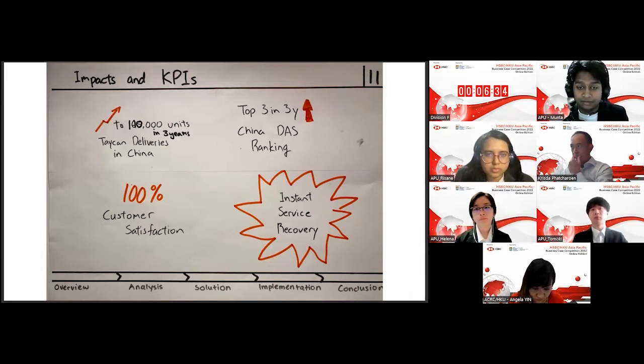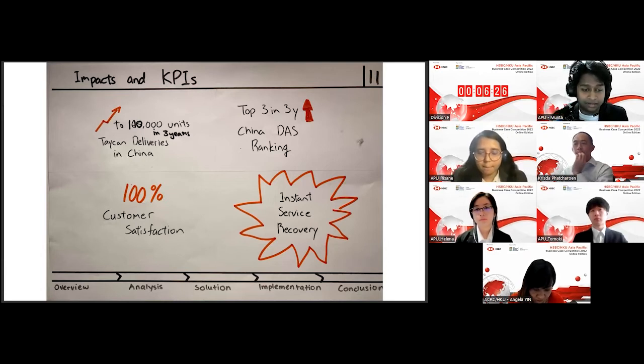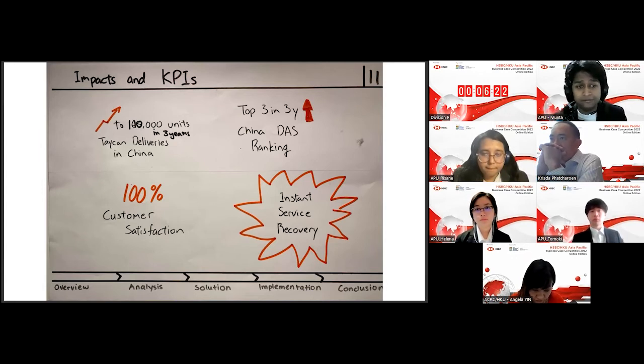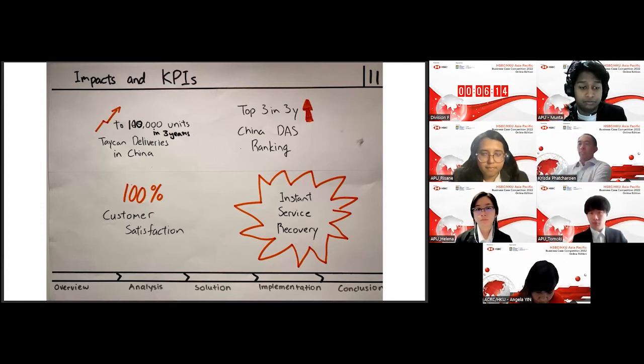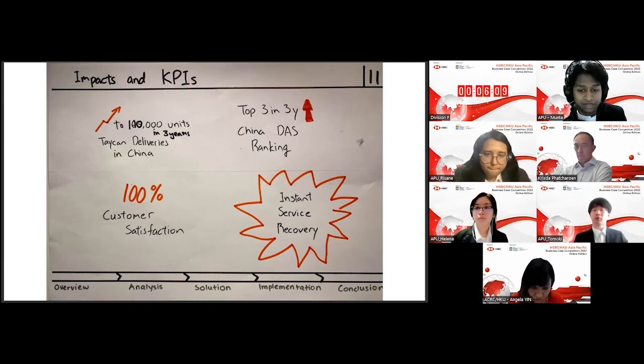And so after that, we want to reach the Chinese dealership association index, satisfaction index of top three in the next three years. Currently, we're ranked 10th. And next, we want to reach 100% customer satisfaction. If we aim for the stars, we'll reach the sky. And so if something such as total carbon neutrality can be a dream, then so can an achievable dream, then 100% customer satisfaction can also be an achievable dream.